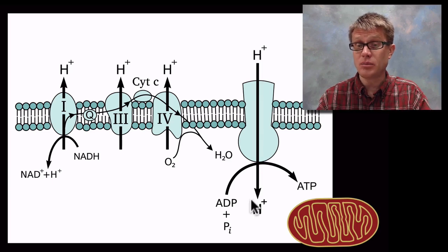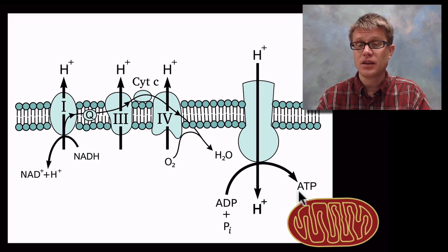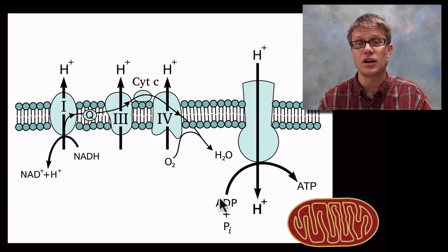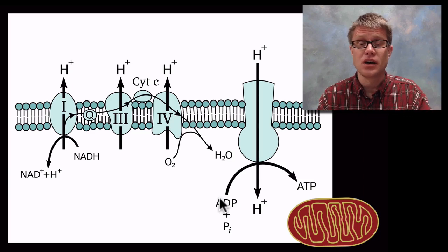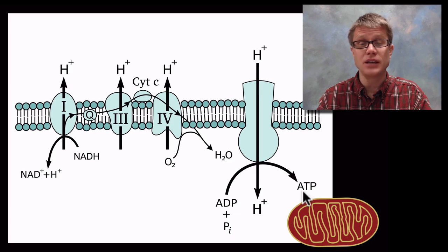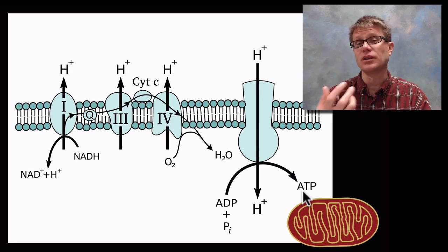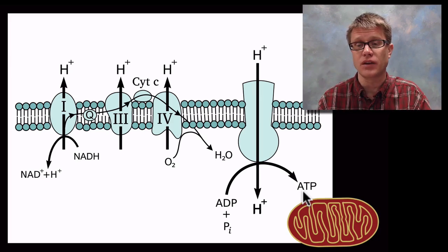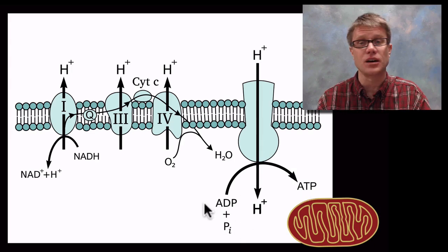We're phosphorylating ADP — taking a phosphate and attaching it to ADP to make ATP. ATP has more potential energy than ADP, and that's the energy source we use inside our body. ATP is not energy itself — it contains a certain amount of potential energy. When we break ATP down into ADP and a phosphate, such as when we're using our muscles, we release that potential energy. The nice thing about cellular respiration is that ADP and phosphate can return to the mitochondria and be used to make ATP again.